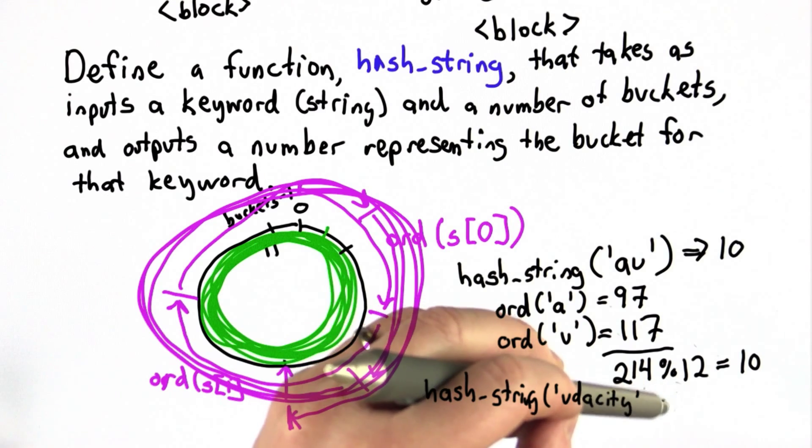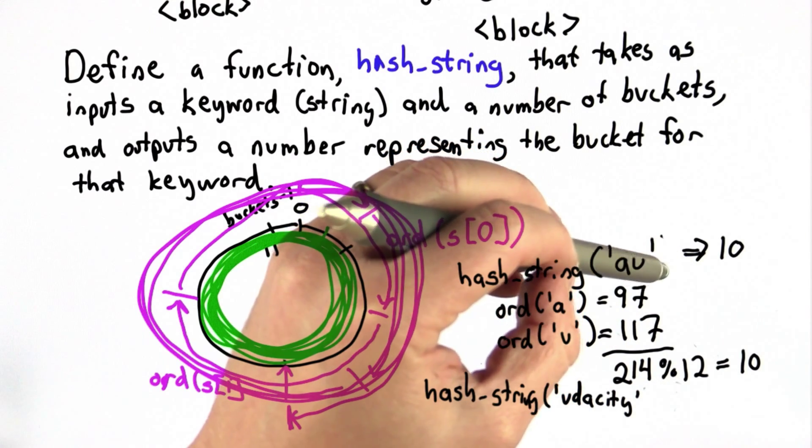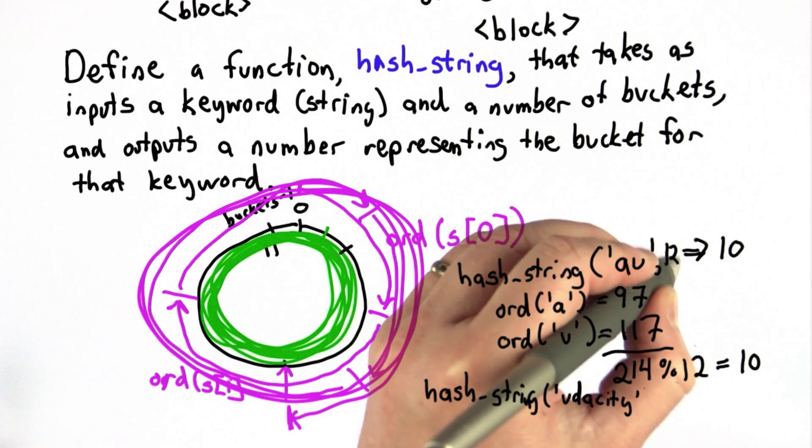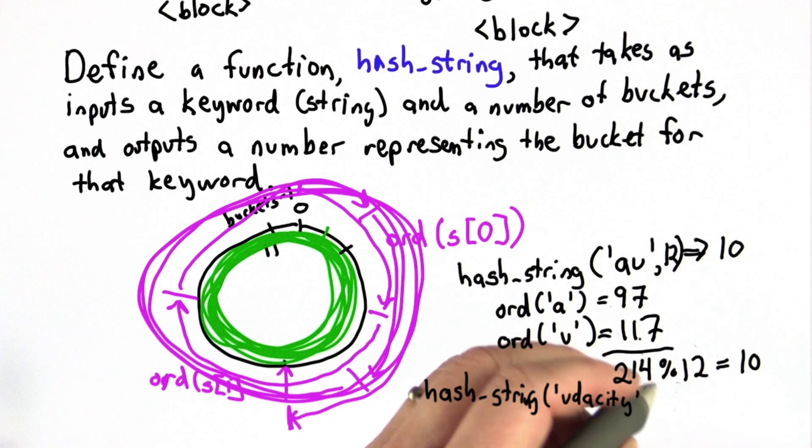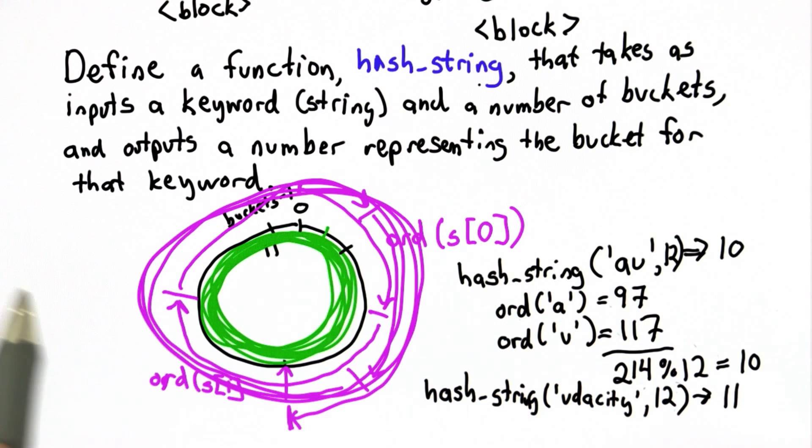We need two inputs to hash_string. Both the string and the number of buckets matter. So here we're also assuming 12 buckets. Here we'll use 12 buckets again. The result should be 11. So see if you can define a function hash_string that does this. And we want it to take these two inputs and produce a number that tells us what bucket that keyword should be in.